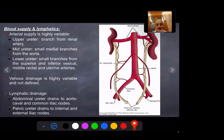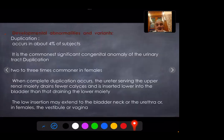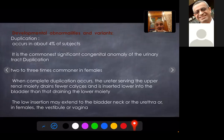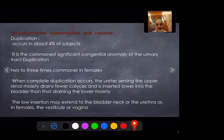Lymphatic drainage: the abdominal ureter drains to the aortic and common iliac nodes, while the pelvic ureter drains to the internal and external iliac nodes. Developmental abnormalities and variants: duplication occurs in about 4% of subjects and is the commonest significant congenital anomaly of the urinary tract. It is two to three times more common in females. When complete duplication occurs, the ureter draining the upper moiety inserts more distally into the bladder than that draining the lower moiety. The lower insertion may extend to the bladder neck, urethra, and in females may extend to the vestibule or the vagina.